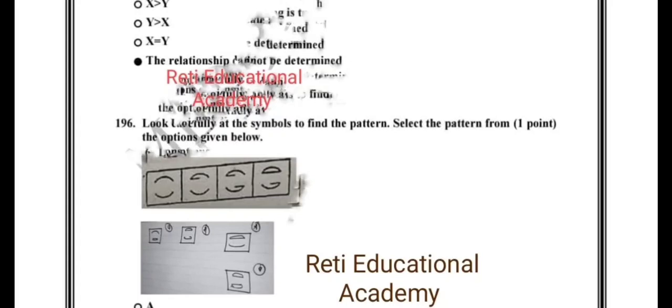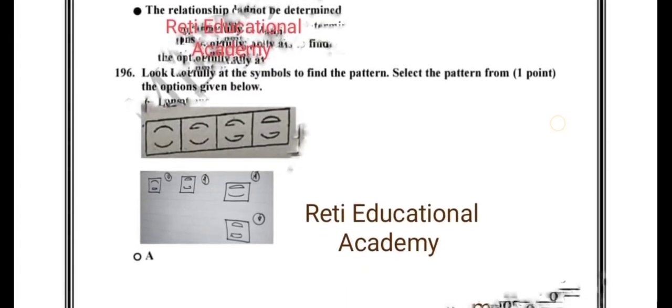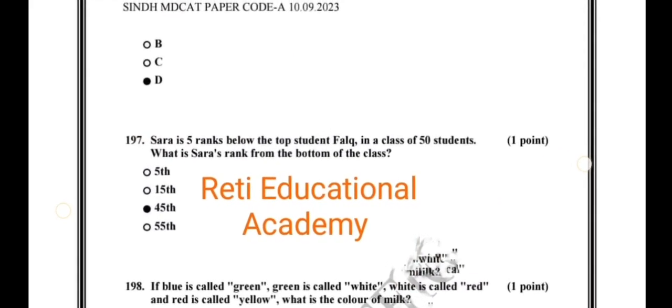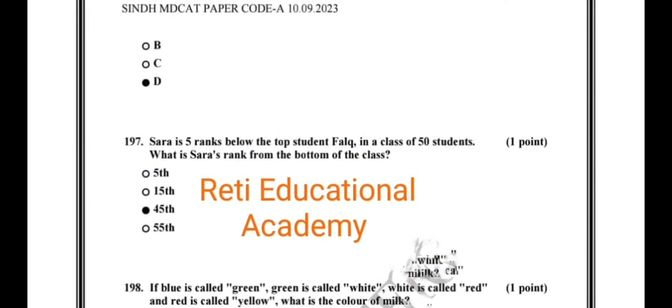Question number 196: Look at the symbols to find the pattern. Select the pattern from the options given. The option is correct but the picture is not given.